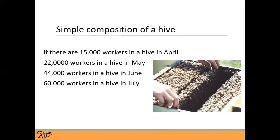In terms of a colony growing through the season with just rough numbers: 15,000 worker bees in a colony in April grows to 22,000 in May, 44,000 in June, and 60,000 workers in a hive in July. We've got a booming, fully functional, wonderful hive in July — that's exactly what we want as beekeepers. That's the kind of growth and projection that we want to see in our colonies.